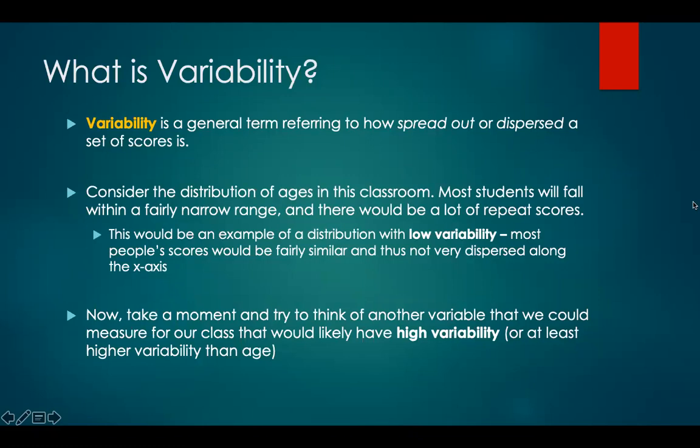Variability is a general term referring to how spread out or dispersed a set of scores is. Consider the distribution of ages in this classroom. Most students will fall within a fairly narrow range, and there would be a lot of repeat scores. This would be an example of a distribution with low variability, meaning that most people's scores would be fairly similar and thus not very dispersed along the x-axis of the histogram.